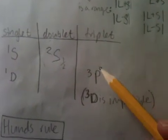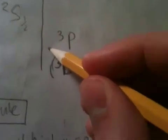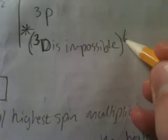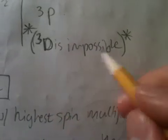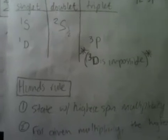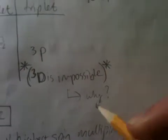And then some triplet states could be 3P. This, however, this is important. This is impossible. But 3D is impossible. If you want, I can explain why that is later.